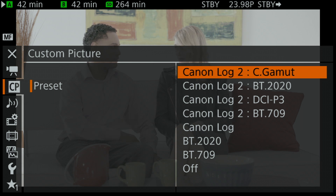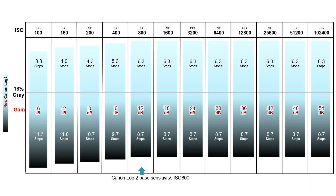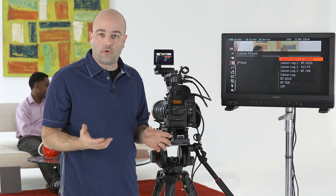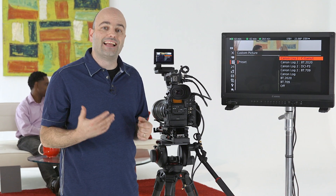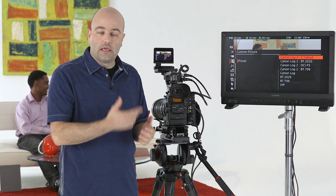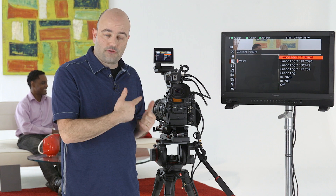Canon Log 2 — what is it? It's really a logarithmic gamma curve that takes full advantage of the full dynamic range of the sensor in this camera system. In order to use it effectively, we also want to make sure we're setting our camera to the native ISO. In this camera for Canon Log 2, that's ISO 800, and that's what I have the camera set to right now.